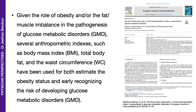Given the role of obesity and the fat-muscle imbalance in the pathogenesis of glucose metabolic disorders, several anthropometric indices such as body mass index, total body fat, and waist circumference have been used to both estimate the obesity status and early recognize the risk of developing glucose metabolic disorders.